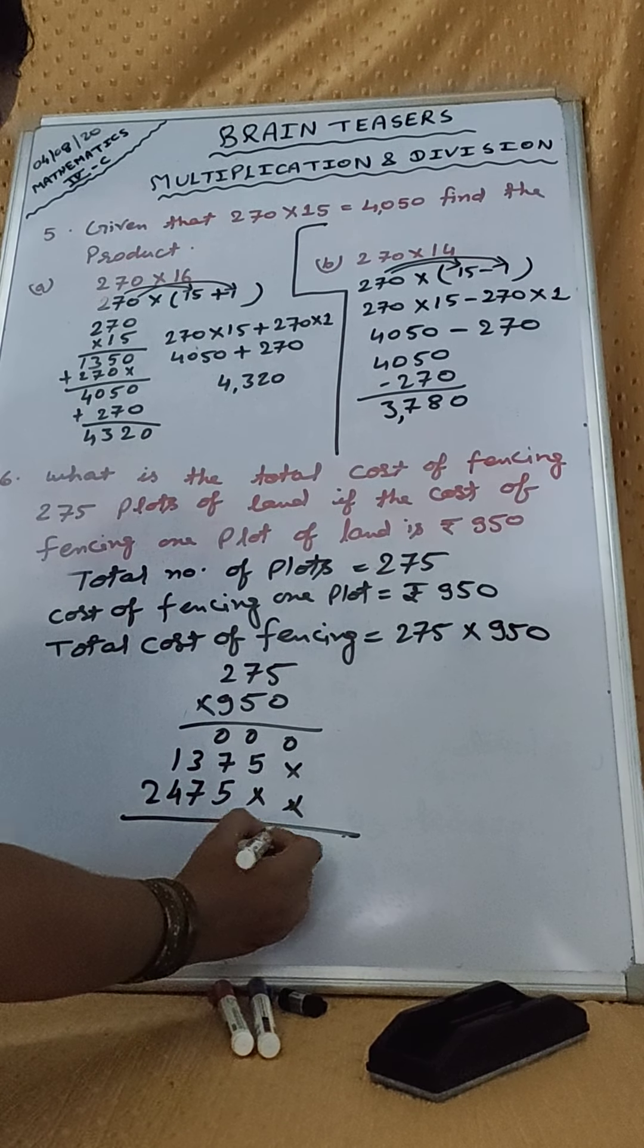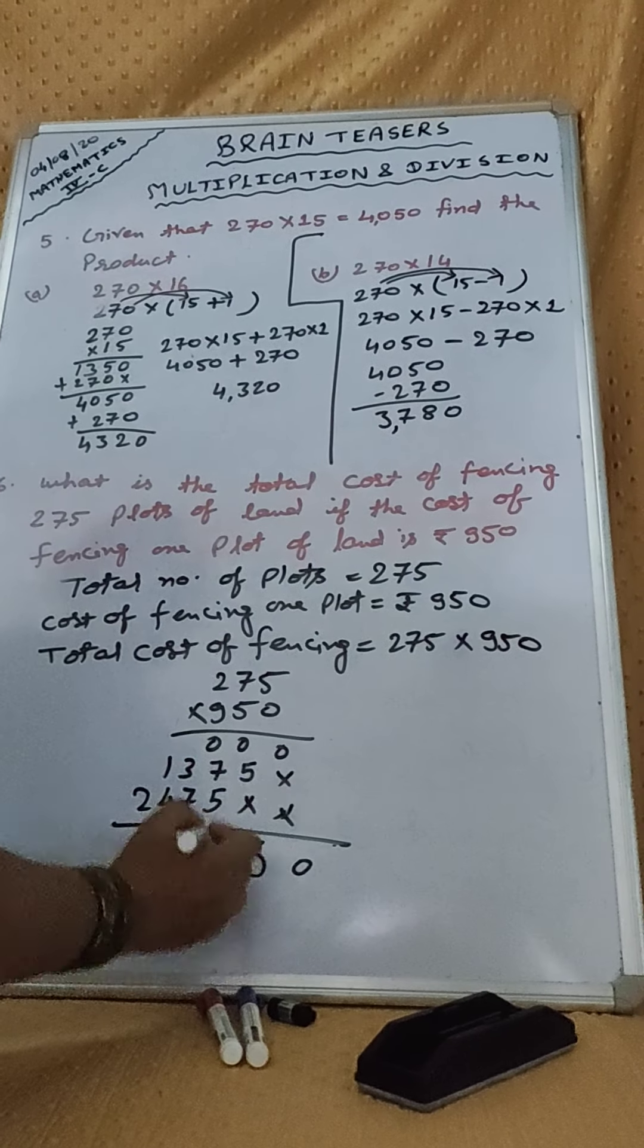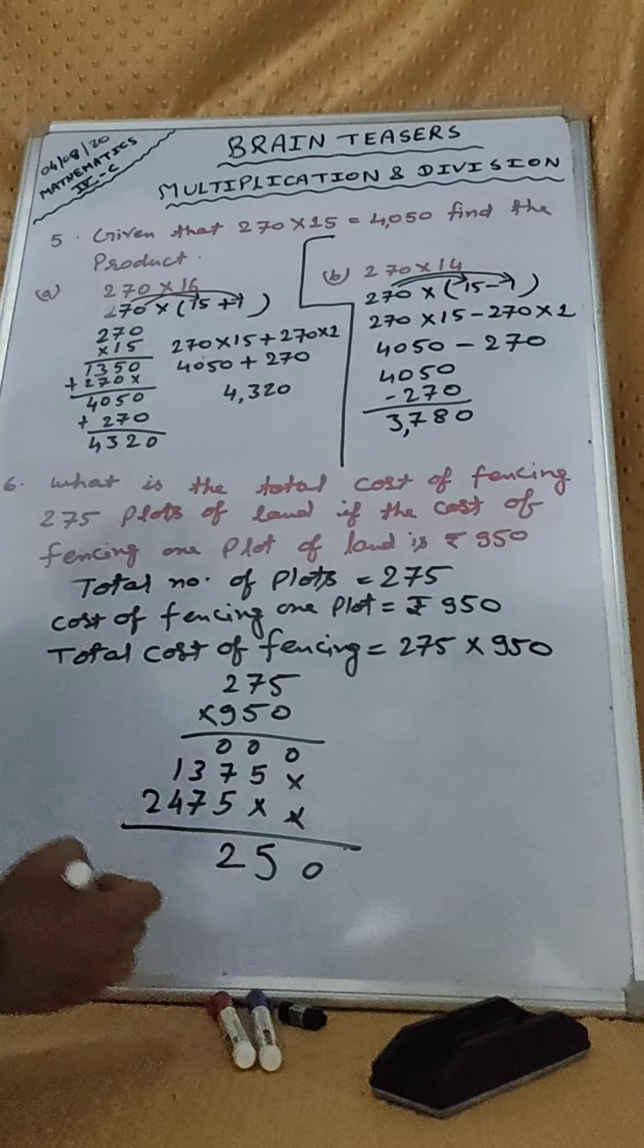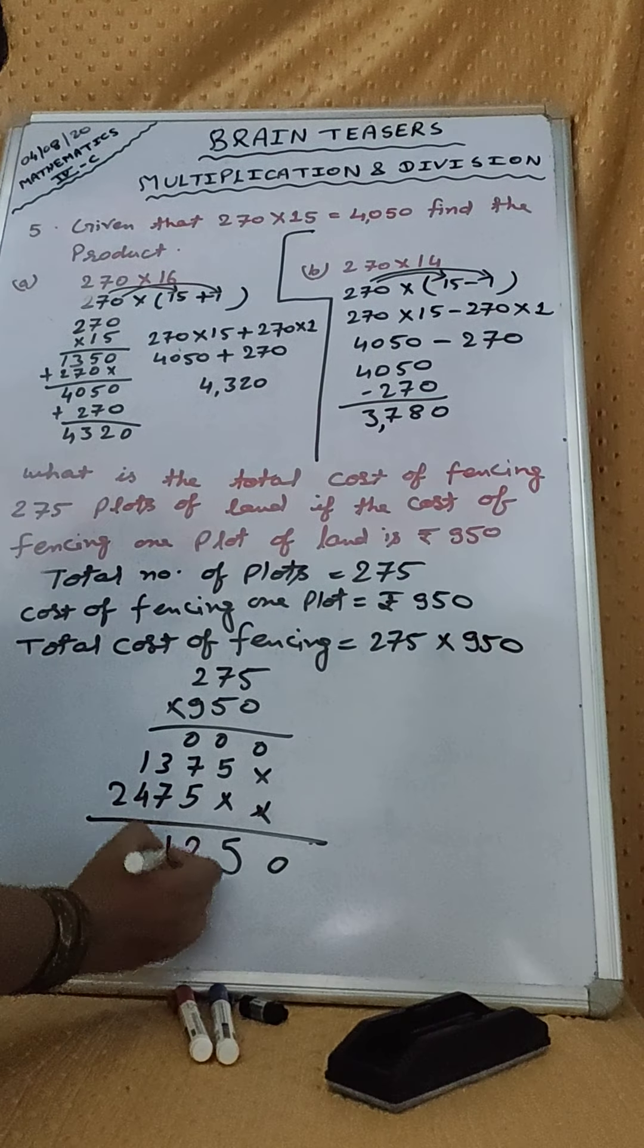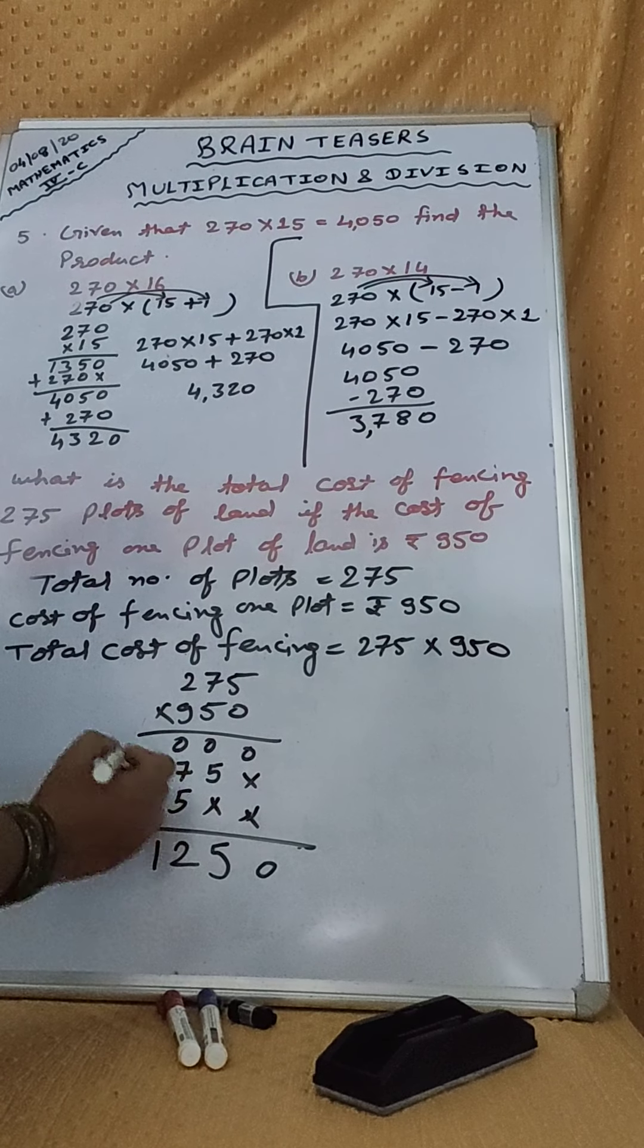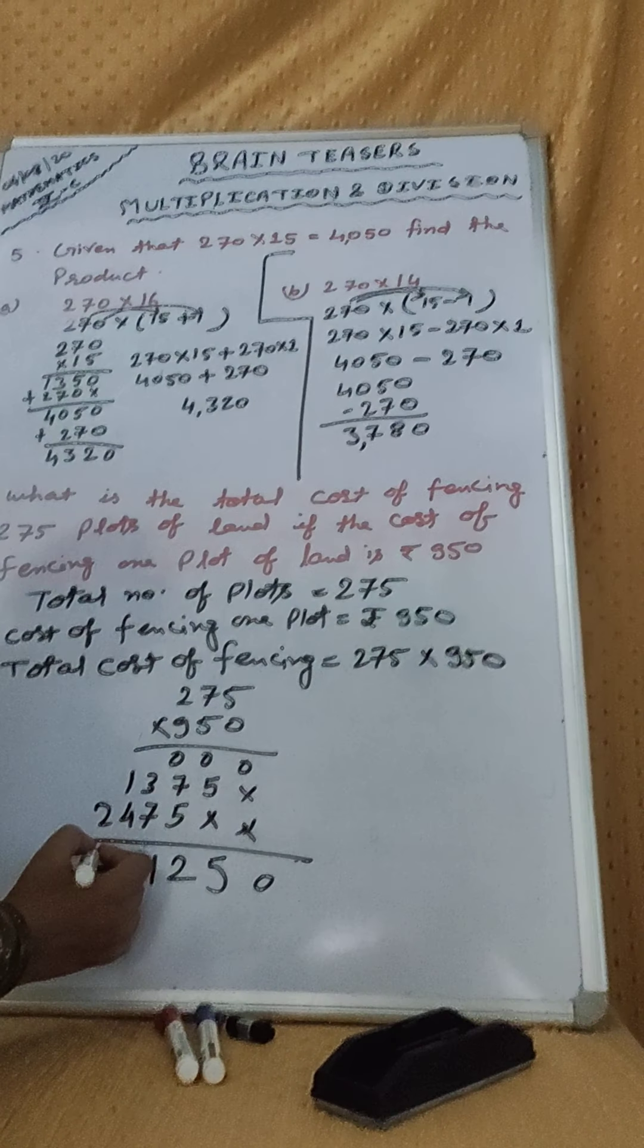0, 5 plus 0, 5. 7 plus 5 plus 0, 12, carry 1. 7 plus 3, 10, plus 1, 11. 4 plus 1, 5, plus 1, 6. And 2.